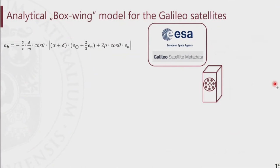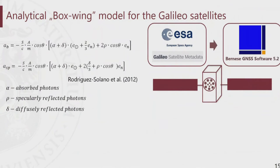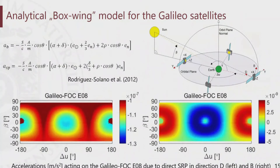My idea to solve this limitation is to introduce the analytical boxwing model for the Galileo satellite — made possible thanks to the metadata released by ESA. The boxwing model simplifies the satellite into the satellite bus (the box) and the satellite wings (the solar panels). I composed and implemented such a model in the Bernese GNSS software. This boxwing model is very useful, as it can describe the course of accelerations acting on the satellite and present the highest and lowest accelerations in the D and B directions due to direct solar radiation pressure on the Galileo FOC satellite.